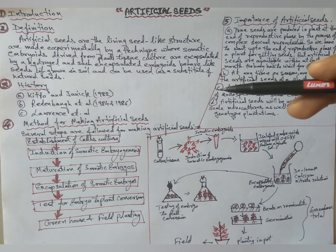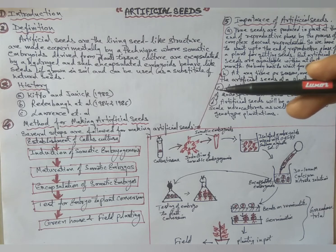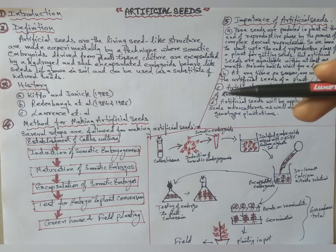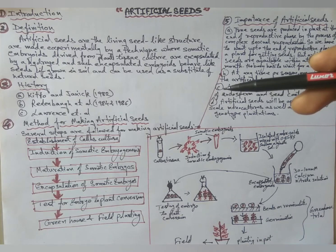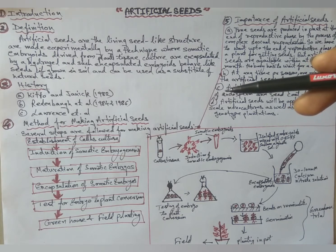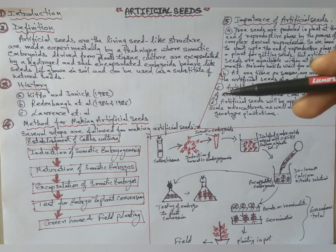Somatic embryos are not enclosed by seed coats, and due to microbial contamination and desiccation they are not able to survive if sown directly into field soil. So tissue culturists try to develop a technique.